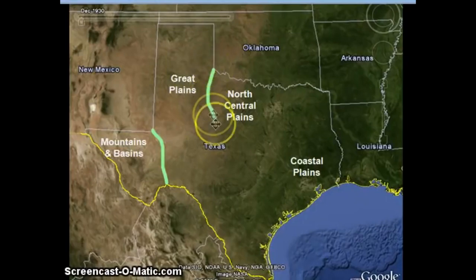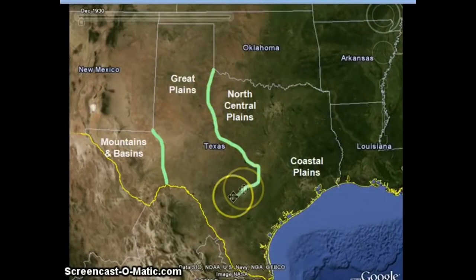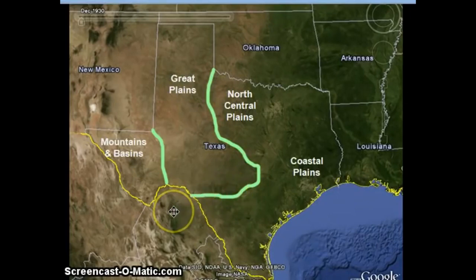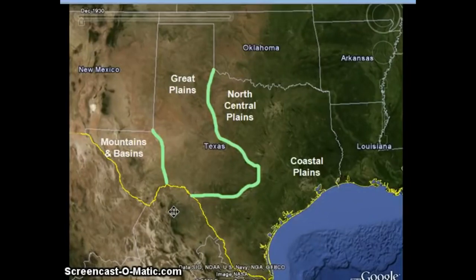The Great Plains is the next region. This region has a little bit more vegetation and a little more rain than the mountains and basins. It is primarily used for ranching, or the cattle industry. Some people do live in the Great Plains along the rivers to be able to get their water.